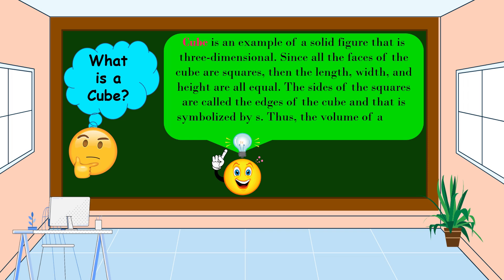Thus, the volume of a cube is S times S times S, or S cubed.